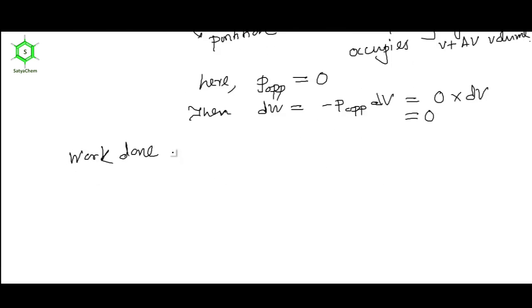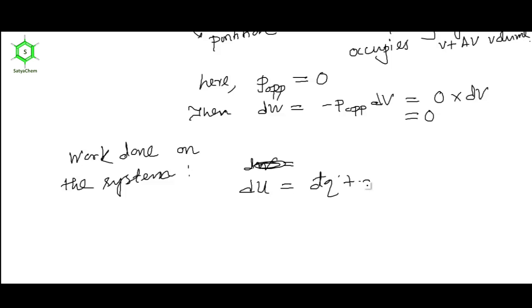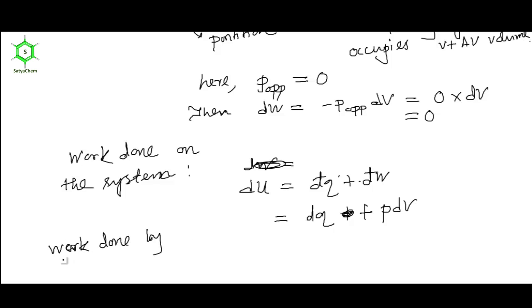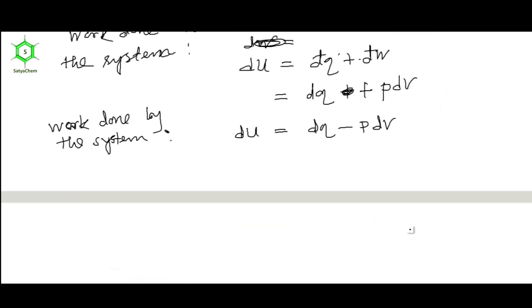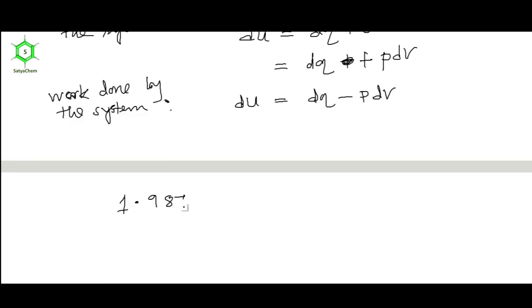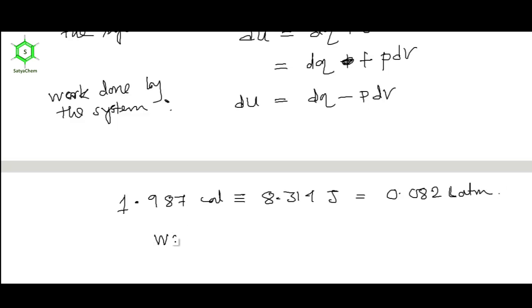Now, in the normal case, the mathematical form of the first law of thermodynamics is DU equal to DQ plus DW. When work is done on the system, DW will be positive, so DU equal to DQ plus P DV. When work is done by the system, DW will be negative, so DU equal to DQ minus P DV. Another important conversion: 1.987 calorie equals 8.314 Joule, which equals 0.082 liter atmosphere. Work is a medium of exchange.